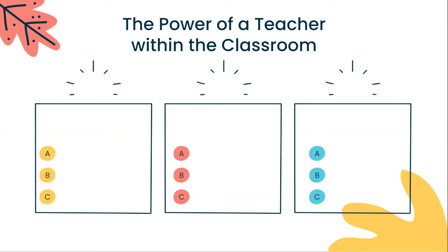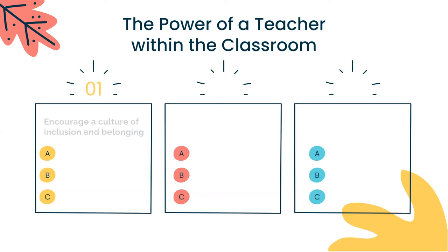Let's turn our focus to us, ourselves, as educators. We have power over our classrooms. Firstly, we can encourage a culture of inclusion and belonging. We are the ones that initiate this. Students look up to us on the first day of school and throughout the year to put forward that culture and expectation that everyone is included, everyone belongs, and we celebrate each other's stories and strengths.